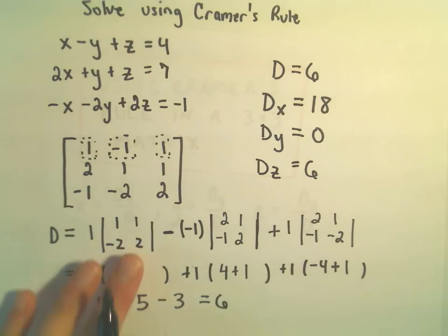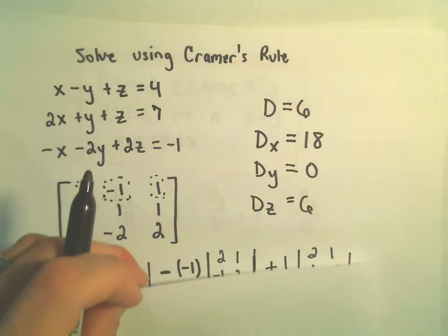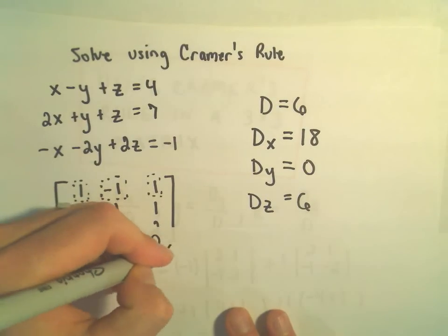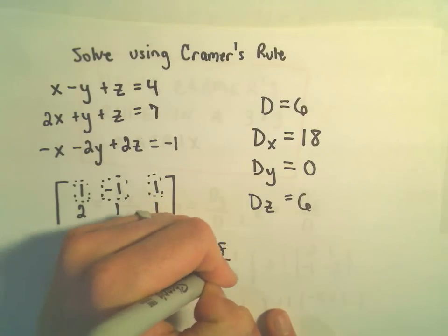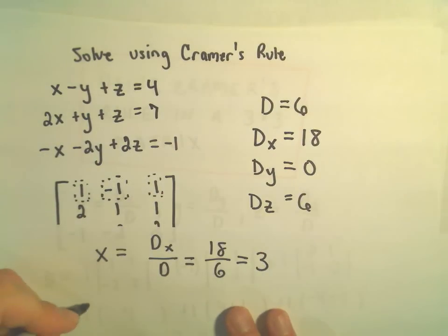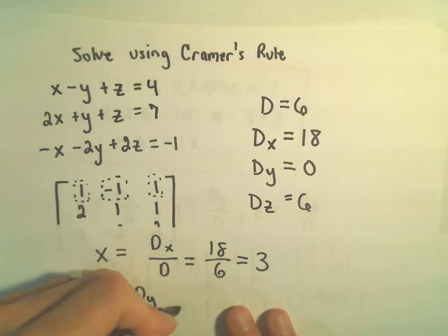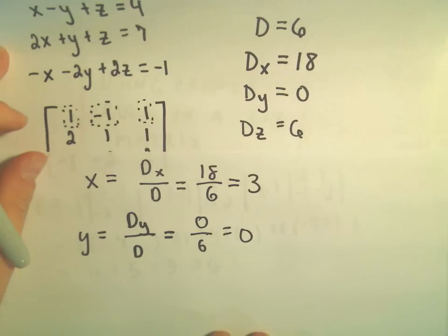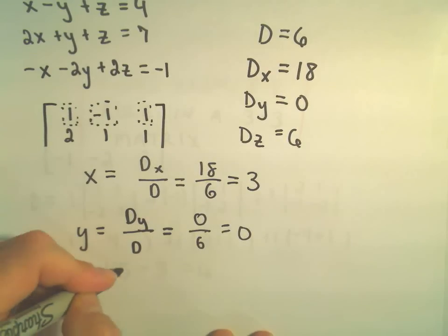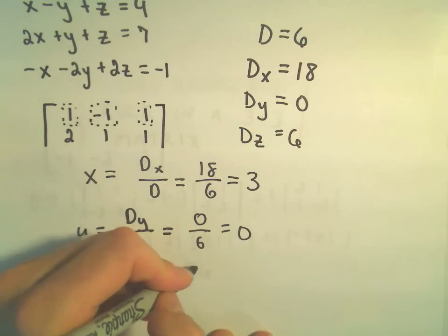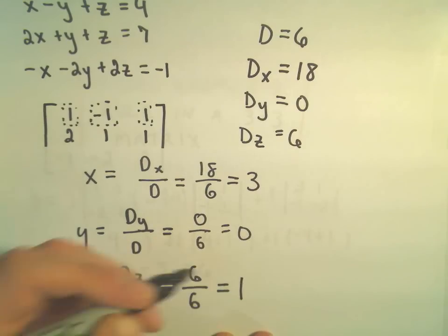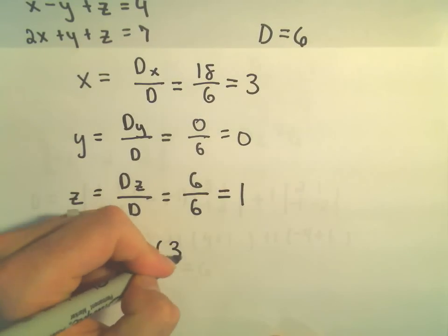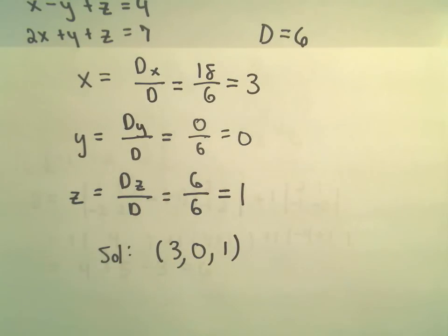Now to find our solutions — we've done the hard part. For x, we take D sub x over D: 18 over 6 equals positive 3. For y, we take D sub y over D: 0 over 6 gives y equals 0. For z, we take D sub z over D: 6 over 6 gives z equals positive 1. So the solution to this original system is x equals 3, y equals 0, and z equals 1.